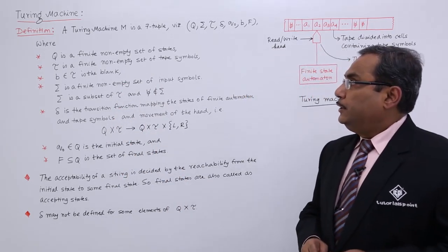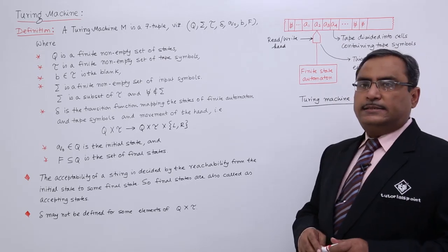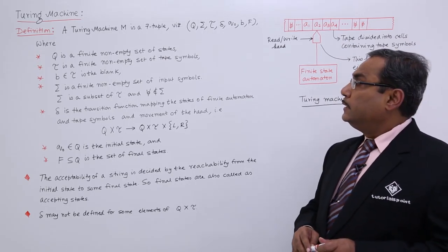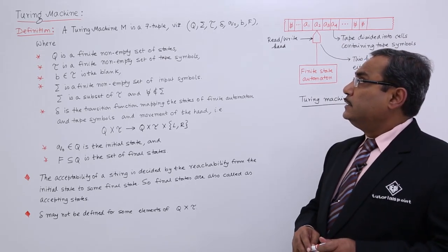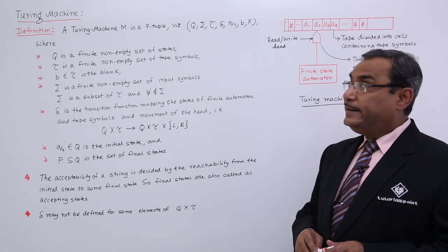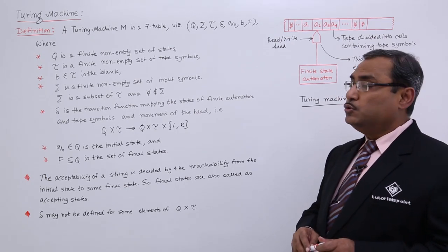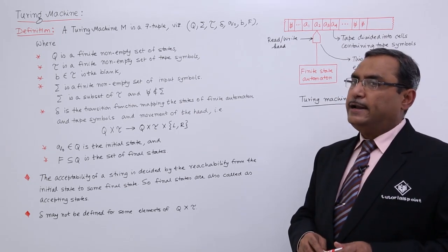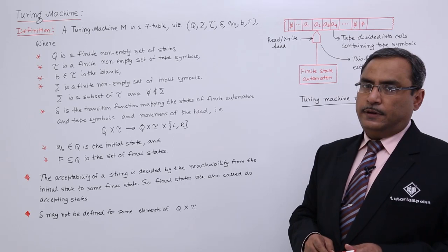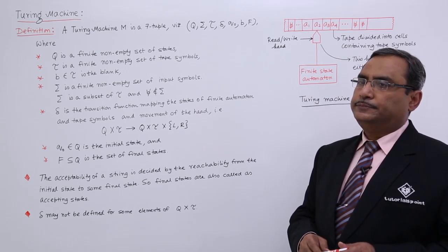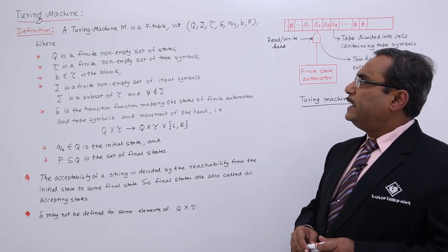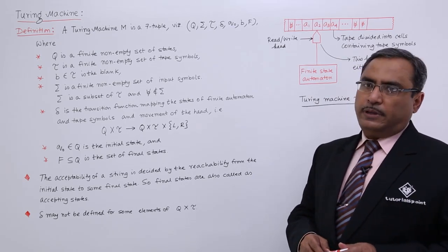A Turing machine M is a 7-tuple: Q, sigma, tau, delta, Q0, B, and F. These are the seven components. Now let me explain each one of them.